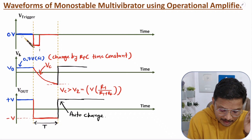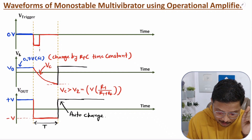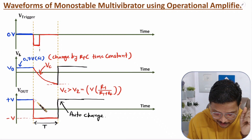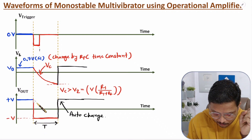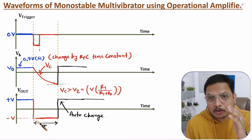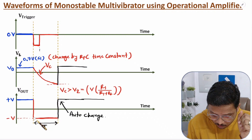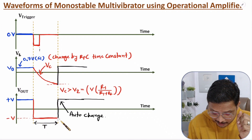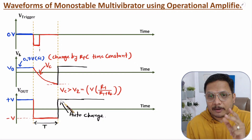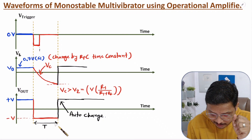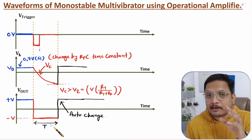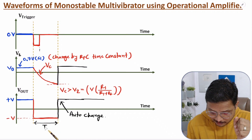We give an external trigger by a negative-going pulse. By this pulse, output changes from the stable state to the quasi-stable state — so output changes from +V to -V. From this interval onwards, the monostable multivibrator stays in the quasi-stable state. But the quasi-stable state changes automatically — from -V back to +V — and that happens after a time duration T. So here we are going to derive the width of this time period T.